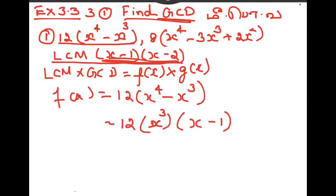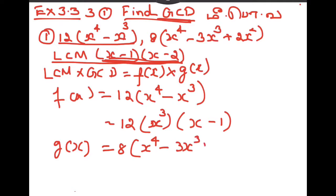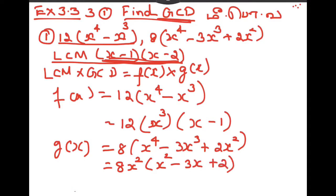Now we can do G of x. G of x equals 8 into x square common, giving us 8x squared times x squared minus 3x plus 2. Here we split x squared minus 3x plus 2 as x minus 2 into x minus 1.